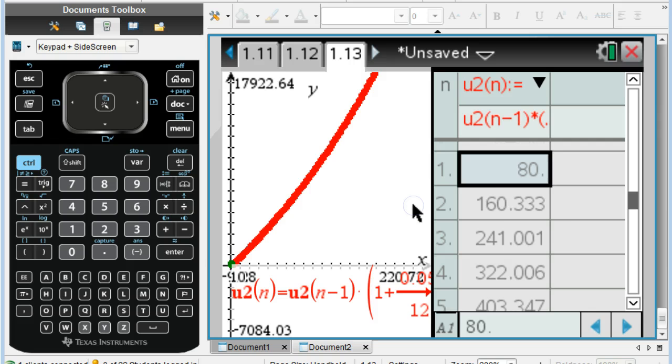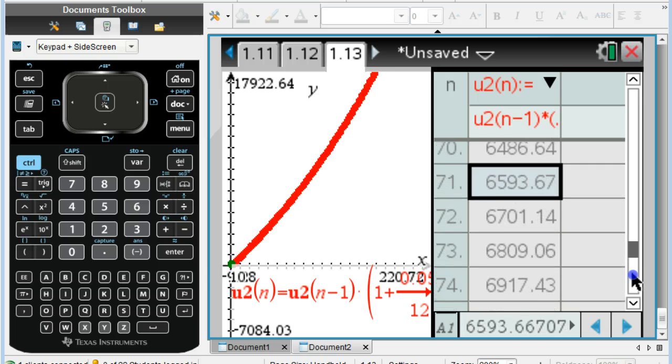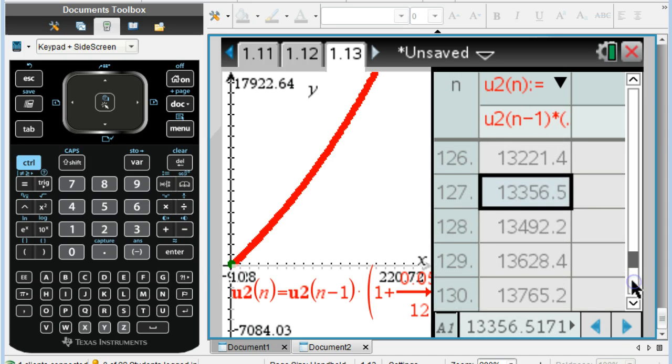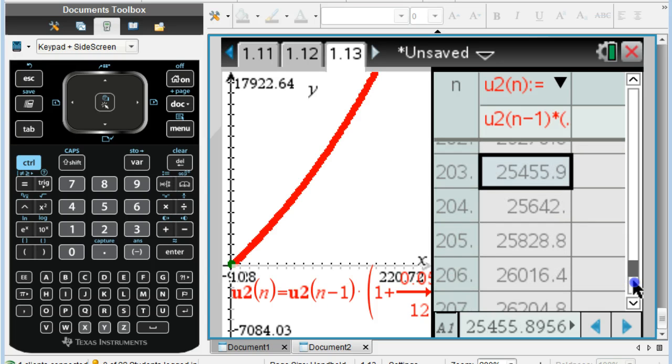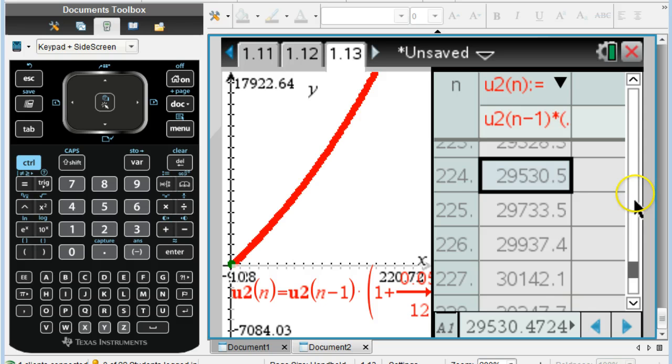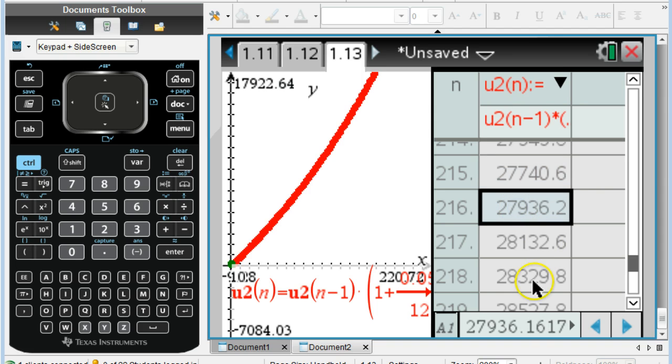What I want to do is go down to 216 and see what my value is at 216. This is taking some time. I'll show you a shortcut in a minute. I went past it.